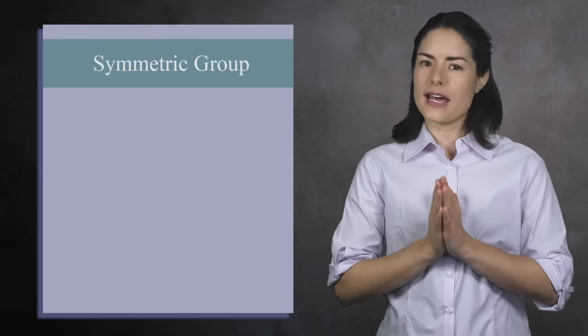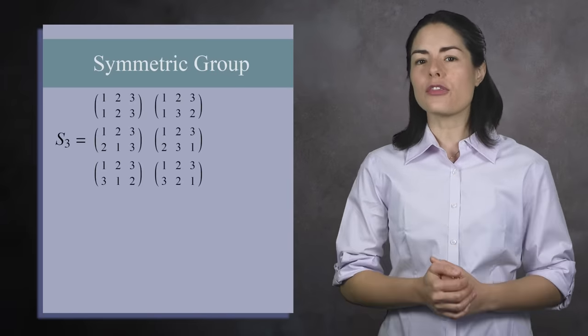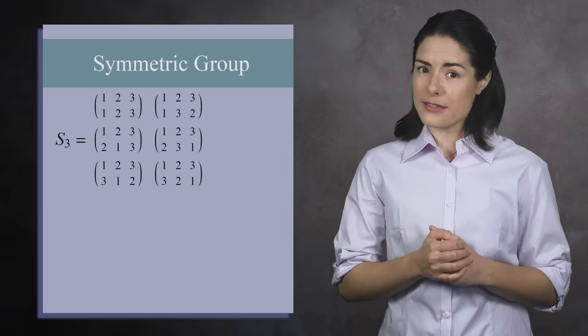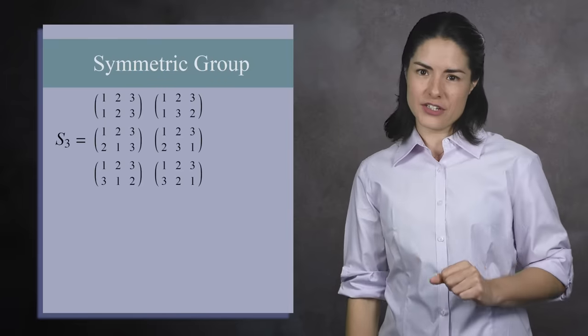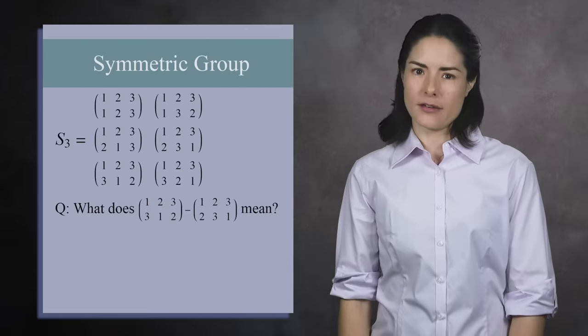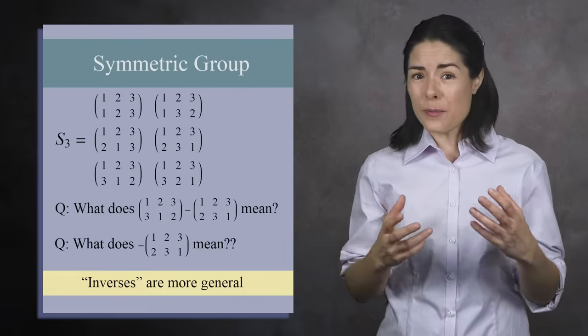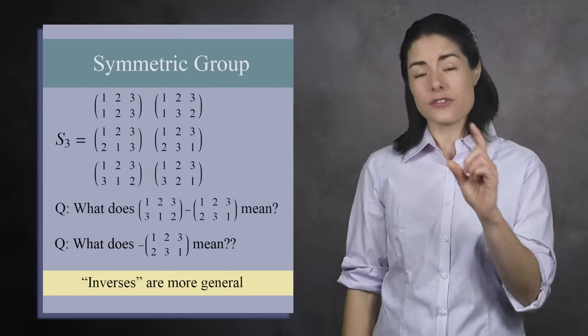What's the benefit for this change in thinking? Why not continue to talk about addition and subtraction? One reason is that in abstract algebra, the elements may not be numbers. For example, the symmetric group on three elements is a group with six elements, where each element is a permutation. What does it mean to subtract the permutation 2, 3, 1? What is the negative of 2, 3, 1? It makes more sense to talk about combining one element with the inverse of another.